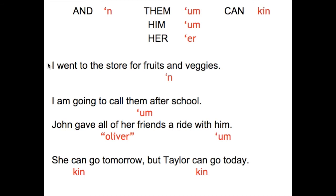Let's take a look at these sentence examples. Number one with 'and': 'I went to the store for fruits and veggies.' Notice 'and' reduces to just 'n' — 'fruits n veggies.' Try and repeat it after me: 'I went to the store for fruits and veggies.' The next example uses 'him': 'I'm going to call him after school.' Try to repeat it after me: 'I'm going to call him after school.'